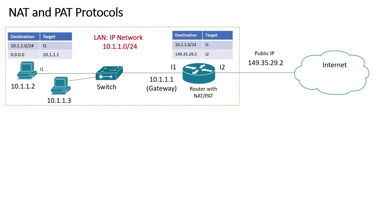Hello, this session is about NAT and PAT protocol in a local area network. In this local area network, we have two hosts, each with a private IP address. We have a switch here that allows the two hosts to communicate with each other. We have a router with two interfaces. Interface I2 is connected to the internet, and interface I1 is connected to the switch. In this LAN, we also have two routing tables: one for the host and one for the router.